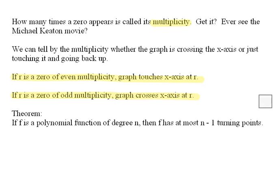So what I want to do is I want to go back and look at our zeros again, keeping in mind if we're talking about even multiplicity, the graph touches. Odd multiplicity, it crosses.